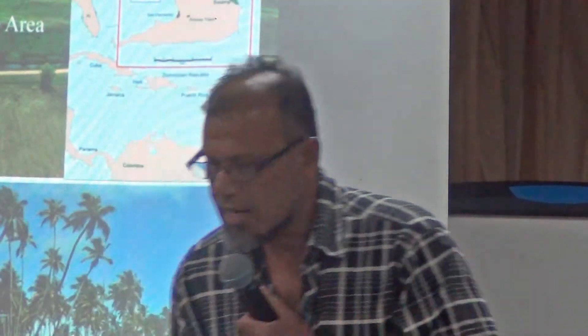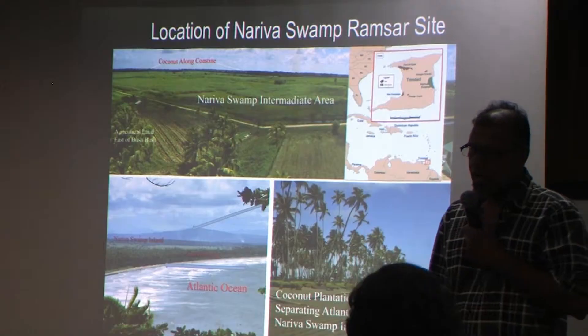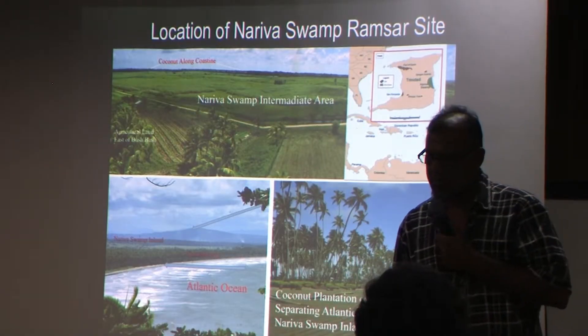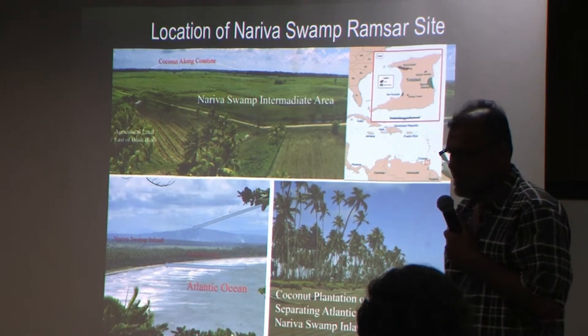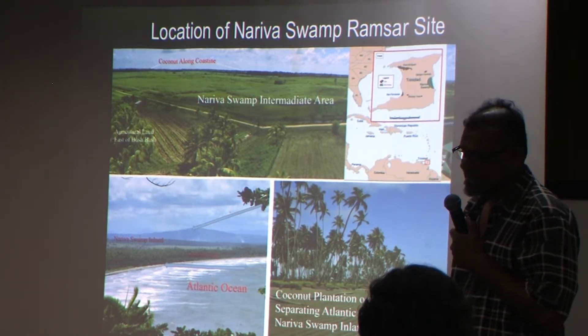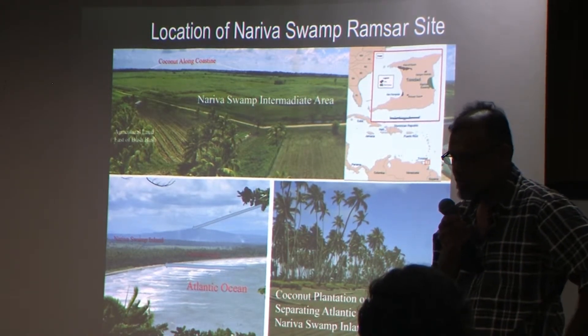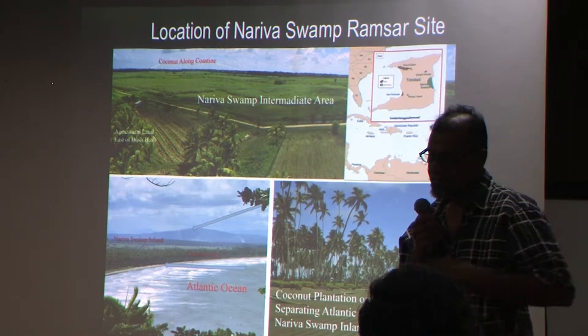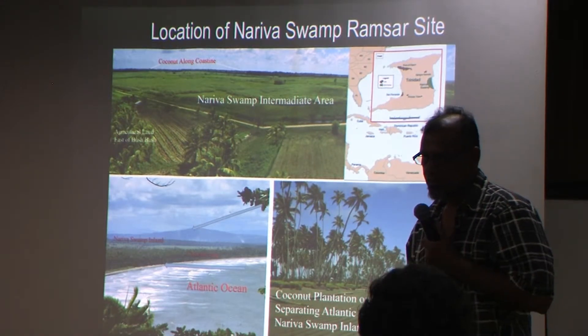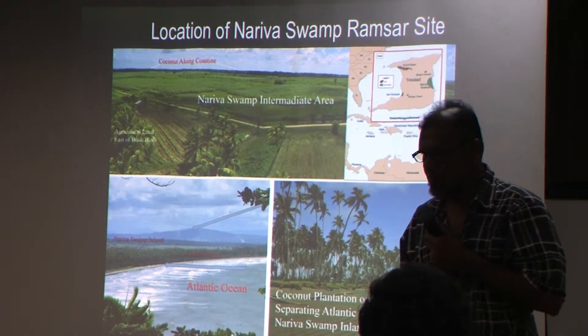This is the location of the Nariva Swamp — it's on the east coast of Trinidad. The swamp is separated by a band of almost 22 kilometers of coconut, which is very important to the swamp area.